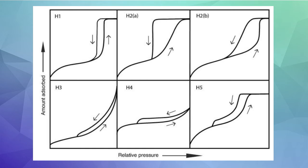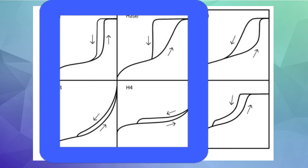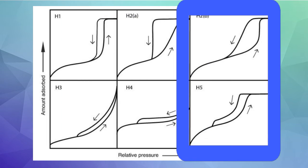There are six kinds of hysteresis loops. Four of these were identified in the original 1985 IUPAC classification, the other two being added later.